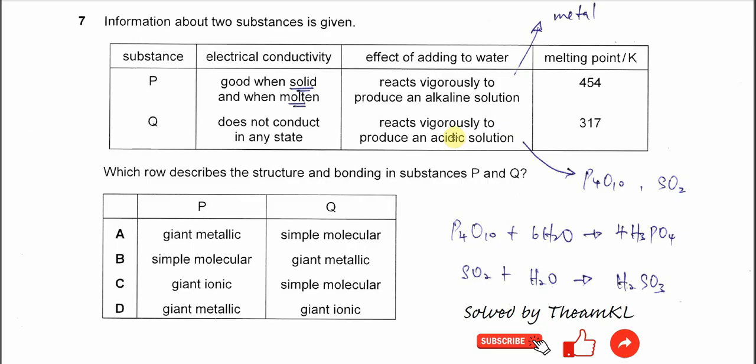The ones that are able to react with water, for example, are like phosphorus oxide and sulfur dioxide. Phosphorus oxide reacts vigorously with water to form phosphoric acid. Sulfur dioxide reacts with water to form sulfurous acid. And these two compounds have a simple structure.